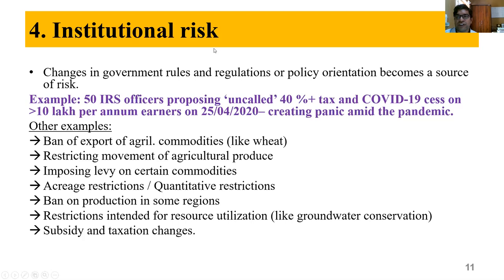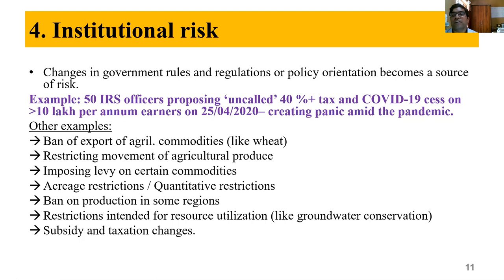Institutional risk: changes in government rules and regulations. Because of the pandemic outbreak, governments are changing rules every day. Beyond that, 50 IRS officers proposed a 40% income tax plus a COVID-19 cess on earners of more than 10 lakh per annum. All these measures create institutional risk — they create panic. Examples: a ban on the export of agricultural commodities like wheat. The government acts as a welfare state to serve its consumers, but farmers are implicated.